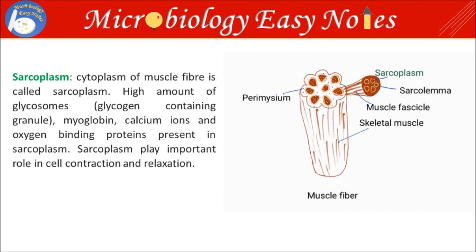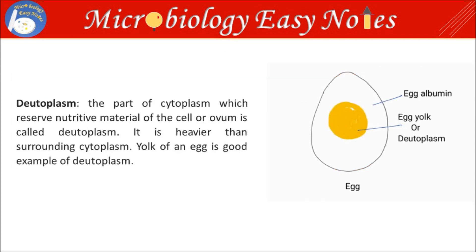Sarcoplasm: the cytoplasm of muscle fiber is called sarcoplasm. High amounts of glycosomes, myoglobin, calcium ions and oxygen-binding proteins are present in sarcoplasm. Sarcoplasm plays an important role in cell contraction and relaxation.